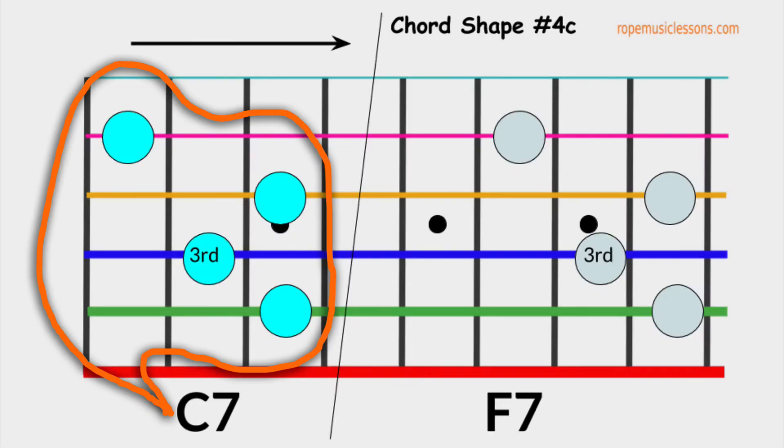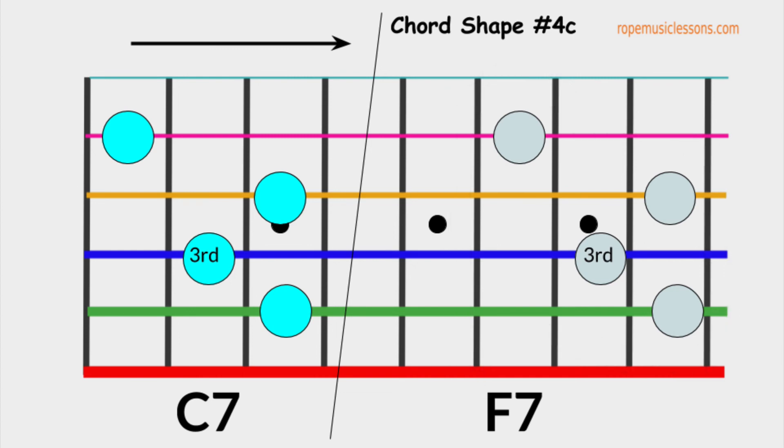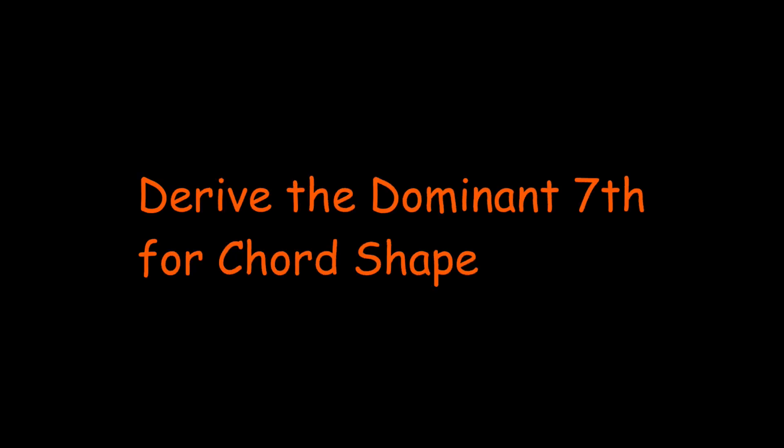This is C7 and F7 shapes. This chord shape is derived from chord shape number 4. So let's call this chord shape number 4C. For your own homework, you can derive the dominant 7 chord for chord shape number 5.